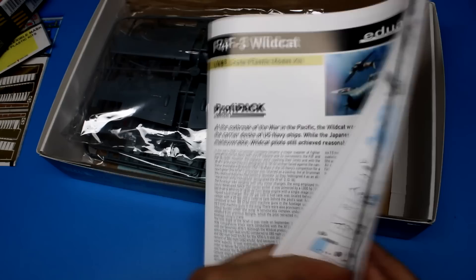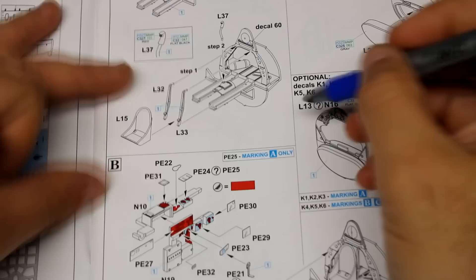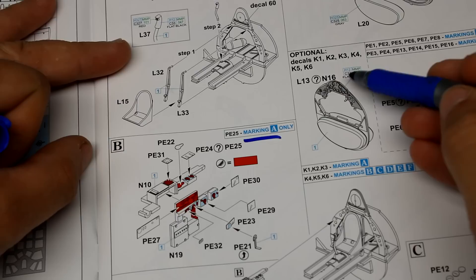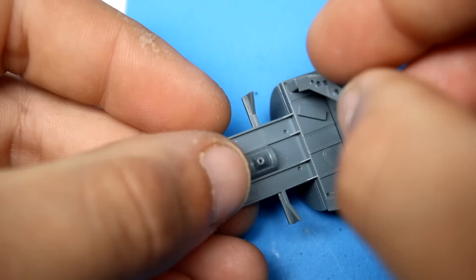As with other Edward kits the instructions are very clear and concise and gives you some background information on the Wildcat. As soon as I flipped to that page I pretty much chose my livery. One thing with Edward though is you do have to mark what markings you're doing through the instructions as there are different variants in this kit.